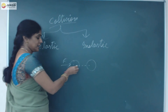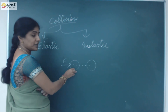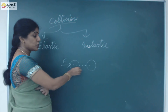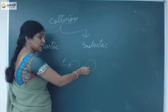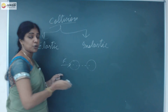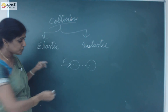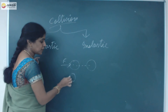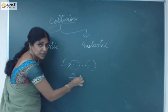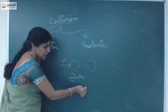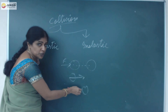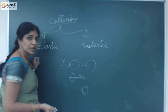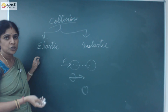The motion of the first object is going to disturb the motion of the second object. Even if there is no physical contact, and an object moves like this, because of the motion of the first object, the other object's motion will be disturbed. That also we call it as a collision.